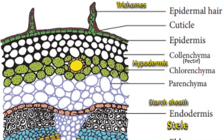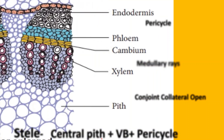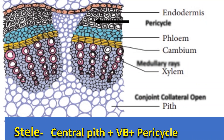The layer below the cortex is called stele. This stele mainly consists of central pith and vascular bundles which are surrounded by pericycle. The pericycle is made up of sclerenchymatous cells which form a cap-like structure around the vascular bundles.